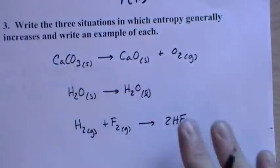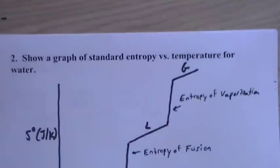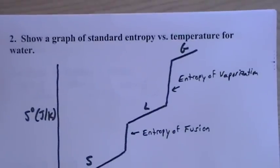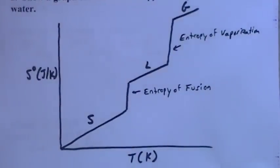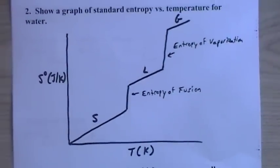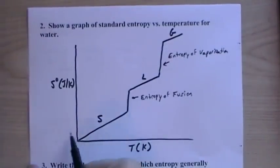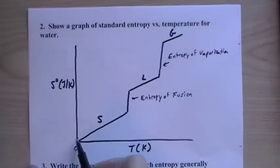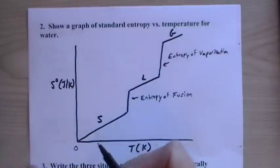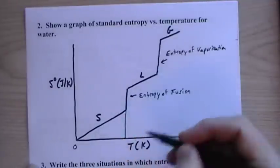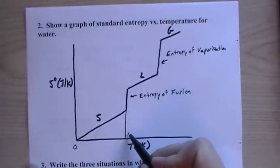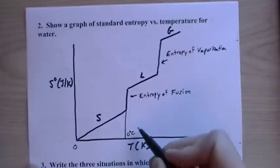Now let's look at a graph of standard entropy versus temperature for water. Starting at zero Kelvin we have zero entropy. As temperature increases it's still a solid, but becomes more random because the molecules start to vibrate in their crystal lattice, so entropy gradually increases.